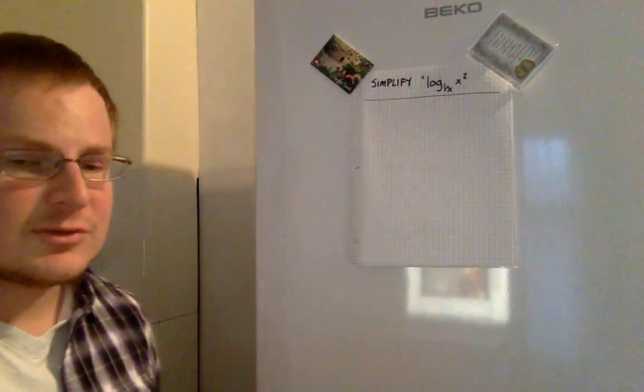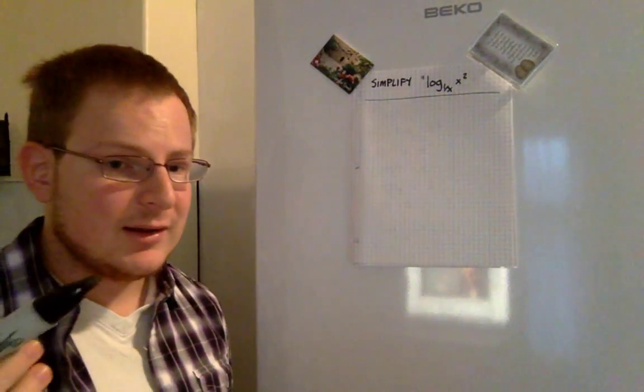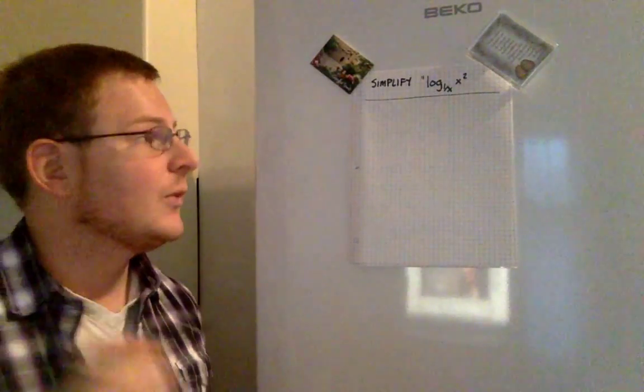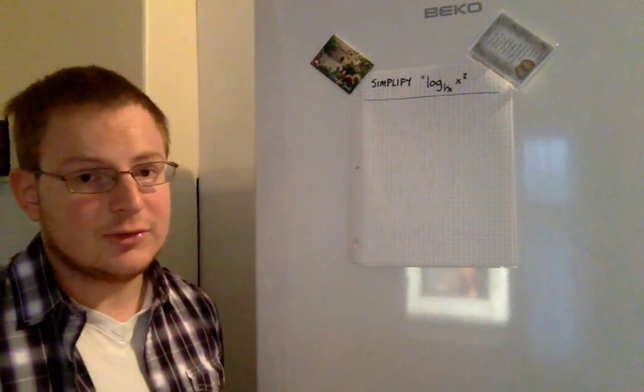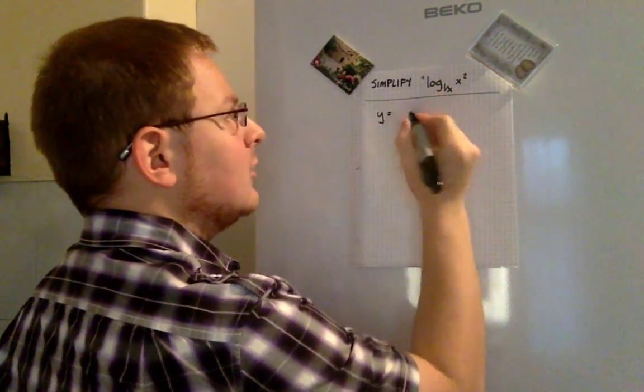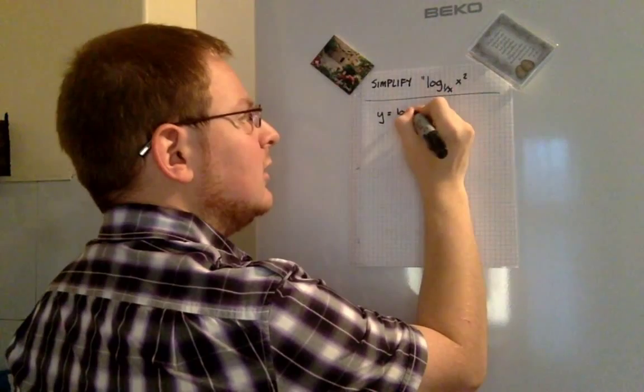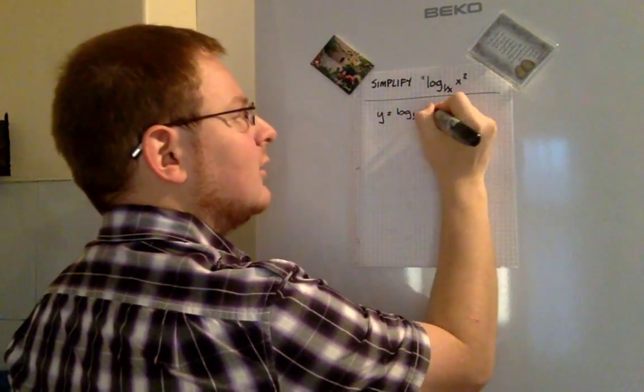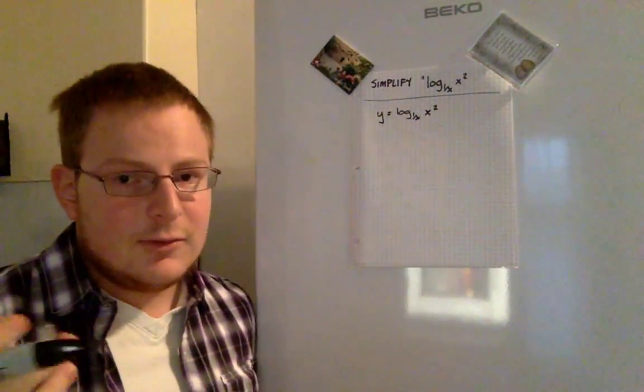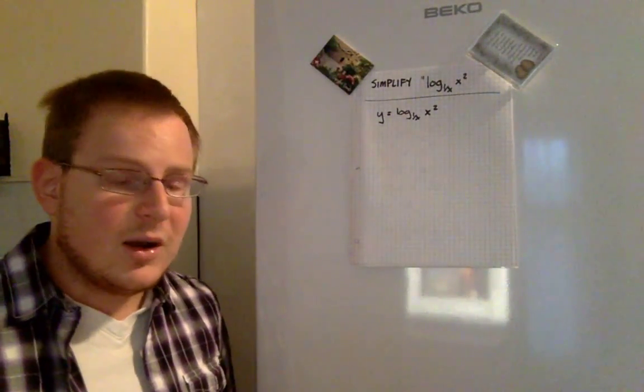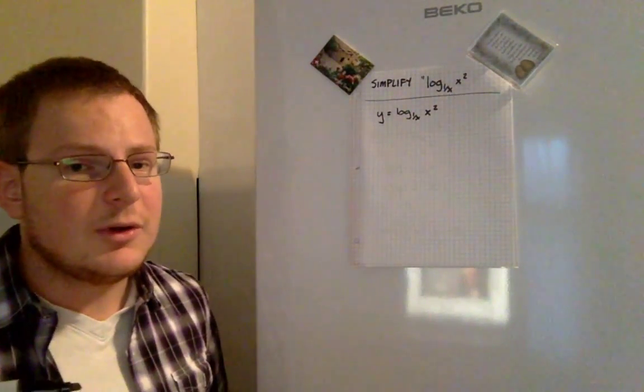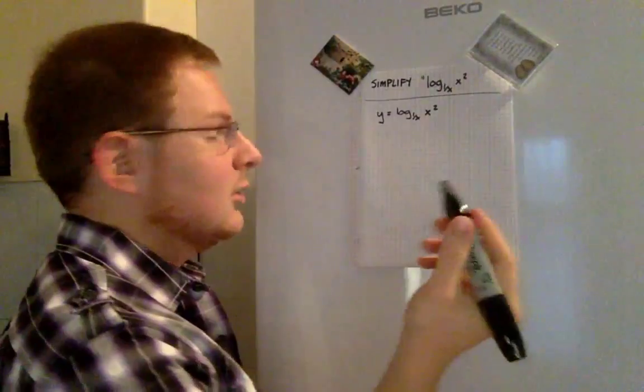The best way that I know to work on these sorts of problems is to actually write it in terms of an equation of something equals something else and then solve it. So I'm just going to use your generic y and say that y is equal to logarithm to the base 1 over x of x squared, and then we can go about solving for y in different ways.